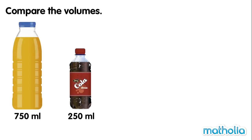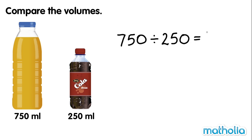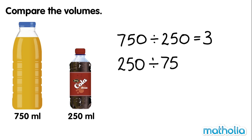Compare the volumes. There is seven hundred and fifty millilitres of orange juice and there is two hundred and fifty millilitres of cola. Seven hundred and fifty divide two hundred and fifty equals three. There is three times as much orange juice as there is cola. Two hundred and fifty divide seven hundred and fifty equals one third. There is one third as much cola as there is orange juice.